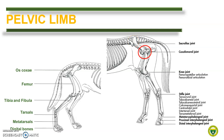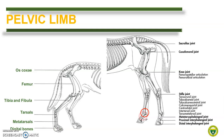The coxofemoral joint is an articulation between the acetabulum of the os coxae and the round head of the femur. The knee is a compound joint formed between the distal end of the femur with the tibia and by the femur with the patella, the largest sesamoid bone. The stifle is another compound joint between the leg bones and the tarsal bones and the articulation within the tarsus itself. Just like in the thoracic limb, the metatarsophalangeal joint is the fetlock, the proximal interphalangeal joint is the pastern, and the distal interphalangeal joint is the coffin joint.